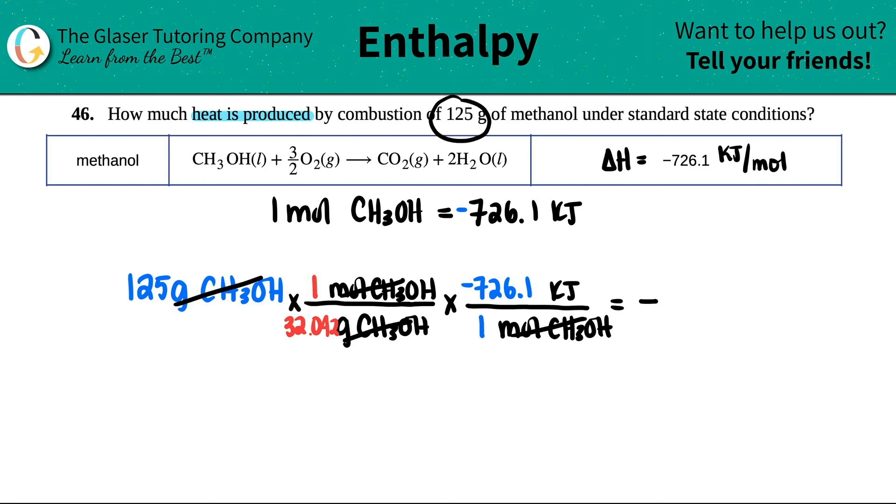But that kind of makes sense because I have way more grams than one mole. So I'm just going to put this into scientific notation: 2.83 times 10 to the 1, 2, 3. And that's kilojoules.